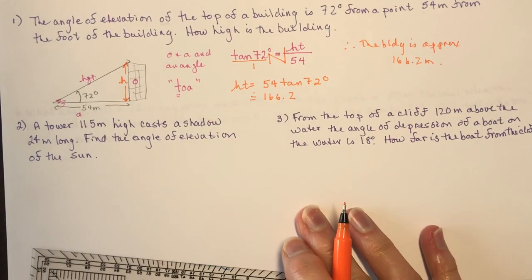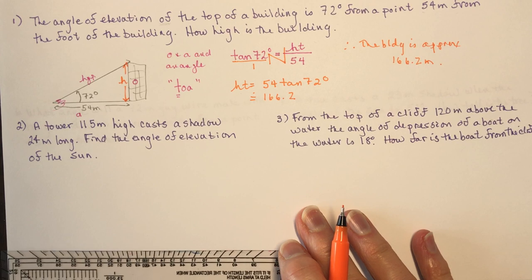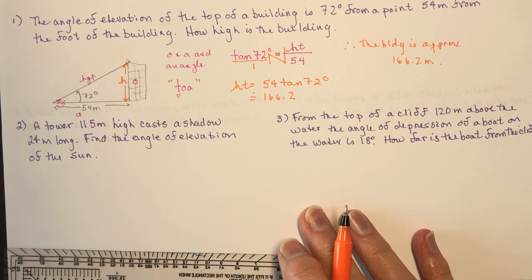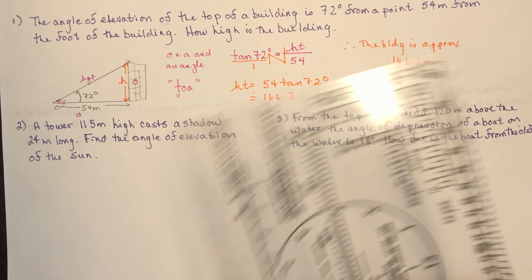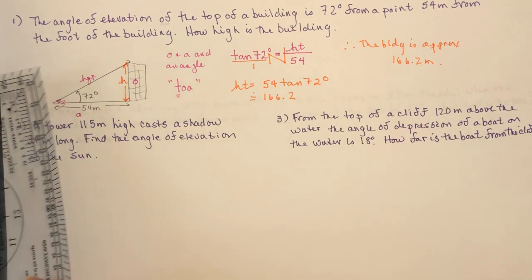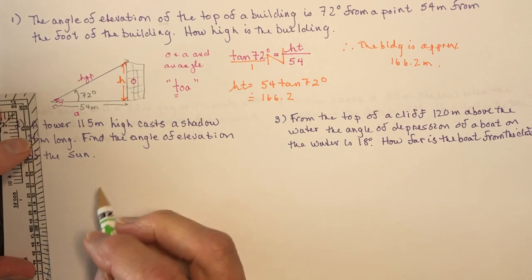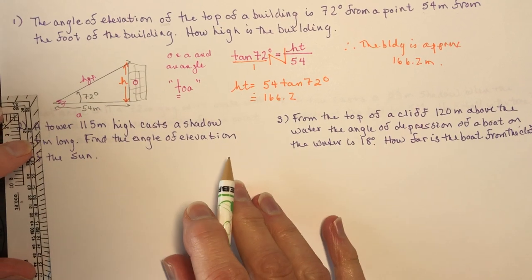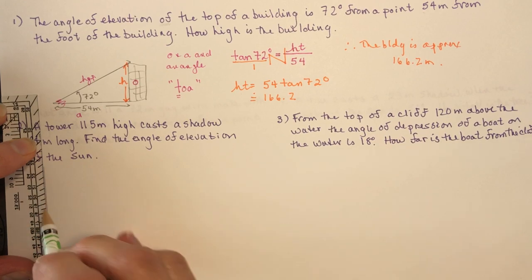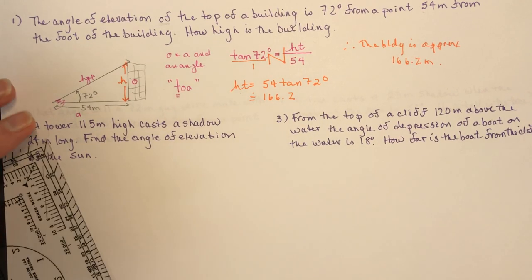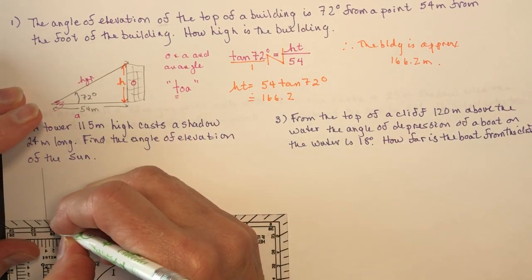Question two: a tower 115 meters high casts a shadow 24 meters long. Find the angle of elevation of the sun. Again, draw a diagram — if you're watching online, stop and draw your diagram, then come back and see if you got the right answer.